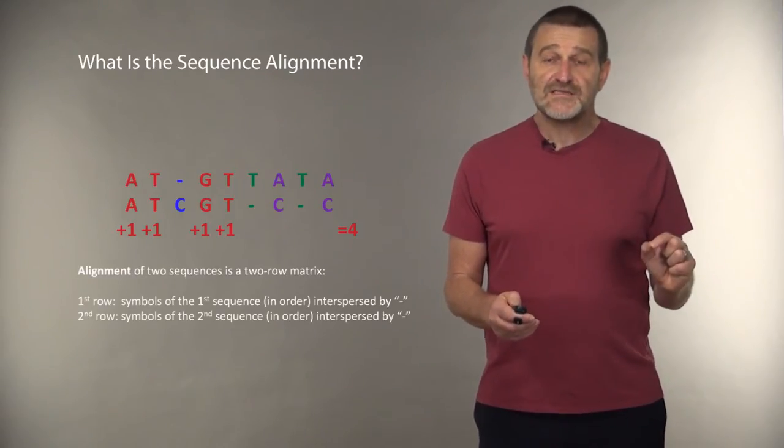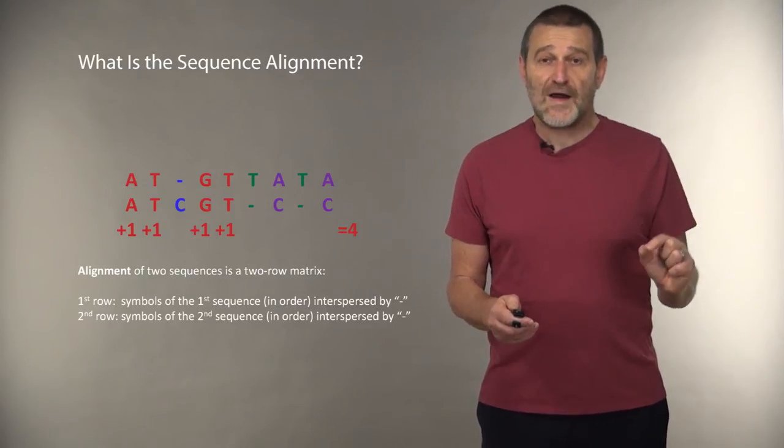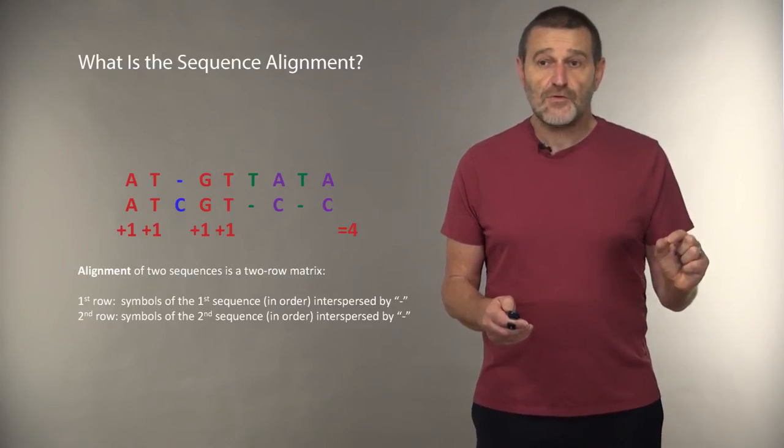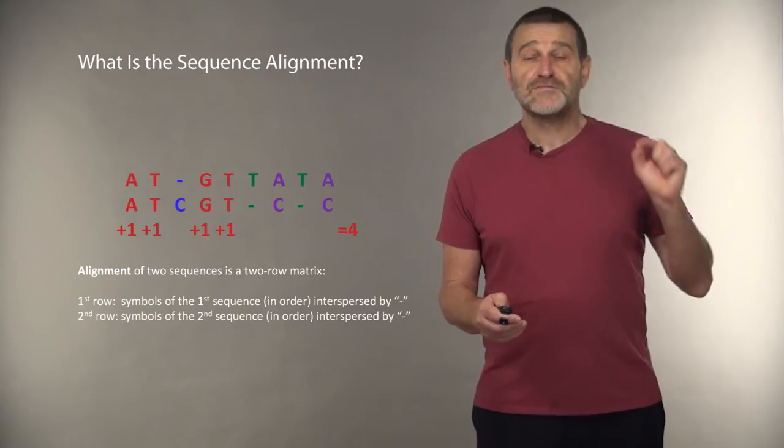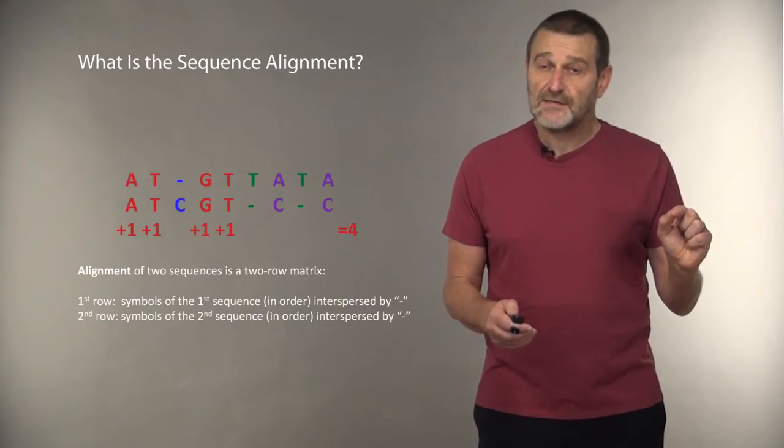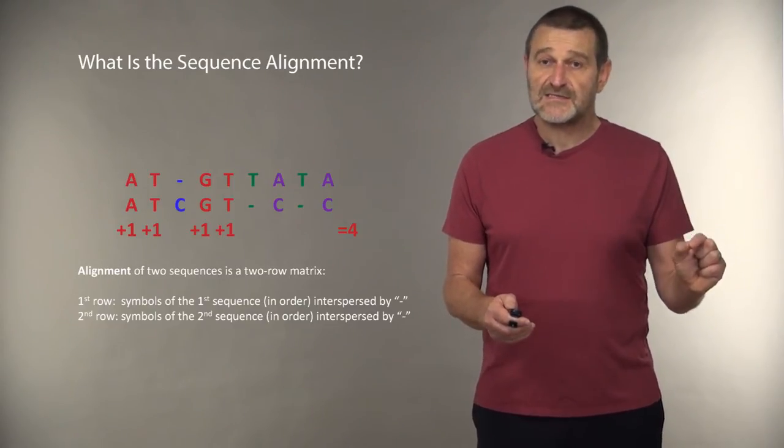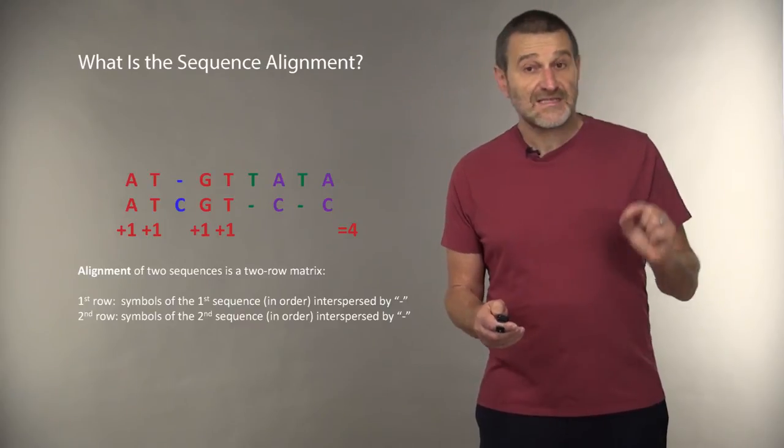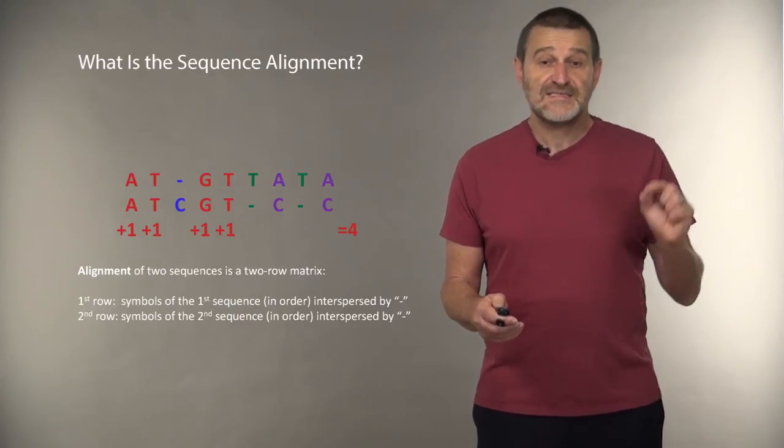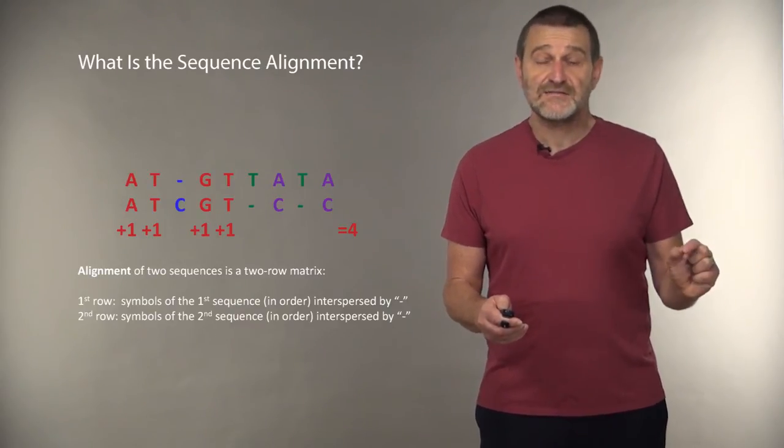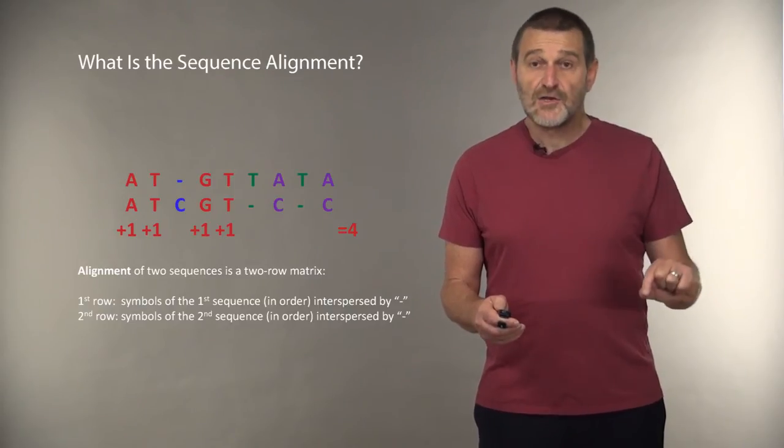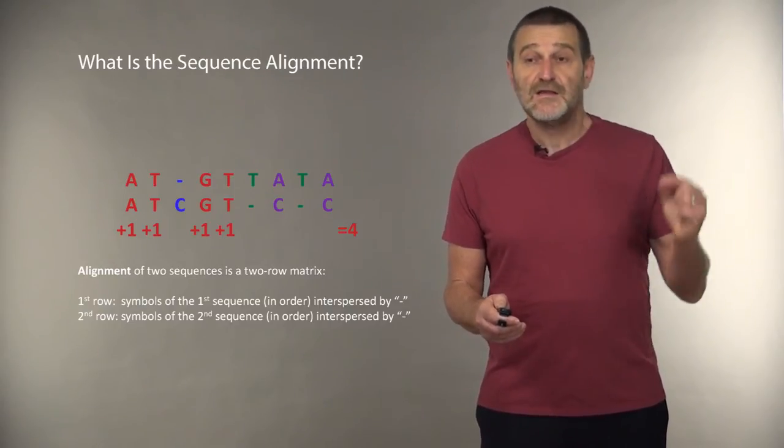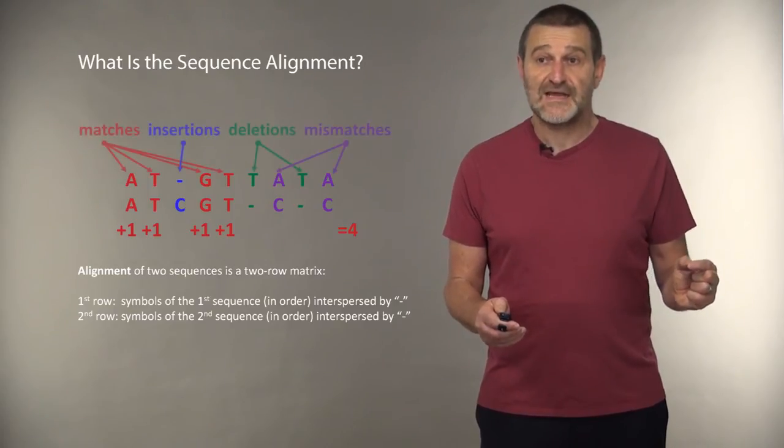Alignment of two sequences is a two-row matrix. In the first row, we have symbols from the first sequence in order, possibly interspaced by the space symbol. In the second row, we have symbols from the second sequence, once again in order, possibly interspaced by the space symbol. And that's what's shown on this slide.